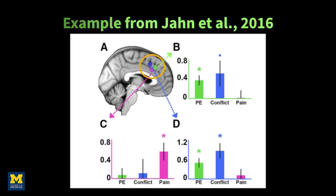All you need is data from two conditions and two regions, and if you need a refresher on how to do a region-of-interest analysis, there are links below. Although I gave you criteria for a double dissociation, these are not absolute rules — you may meet all the criteria except one which is marginally significant, but it can still point towards a trend of a dissociation, which can still be useful. Furthermore, you may be interested in effect sizes and not just statistical significance — we'll talk more about significance versus effect sizes in the next video.